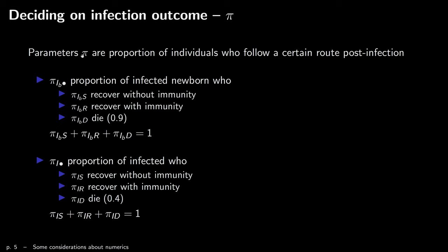The PI values are the proportion of individuals who follow a certain route post-infection. PI_IB bullet: if IB is the first component, it means infected newborns — they can recover without immunity, recover with immunity, or die. For newborns, the hypothesis is 90% die, so proportion 0.9 of newborns that finish their infectious period actually die. For adults it's 0.4. Because it's a proportion, those three numbers in each group must both sum to one.